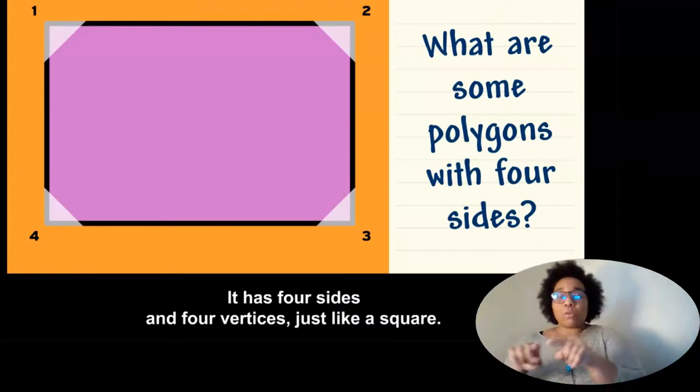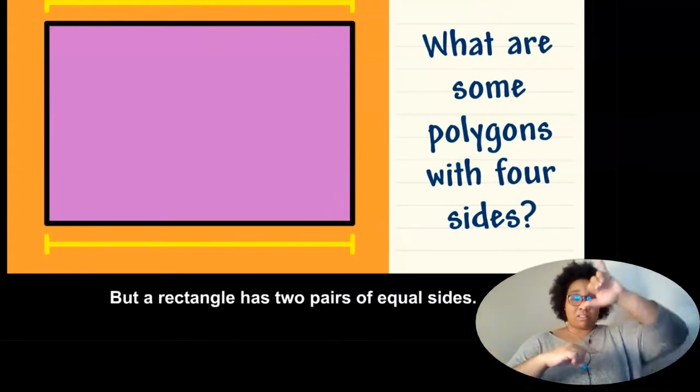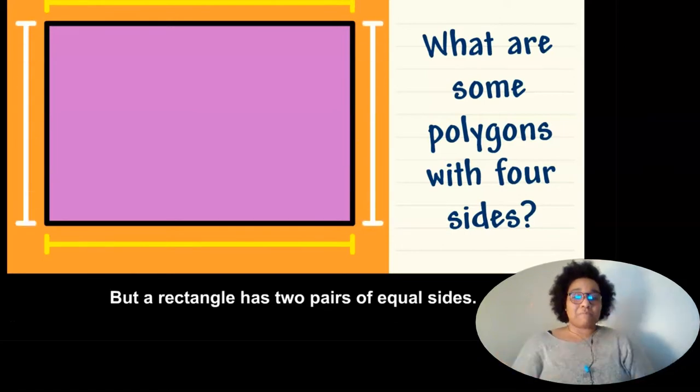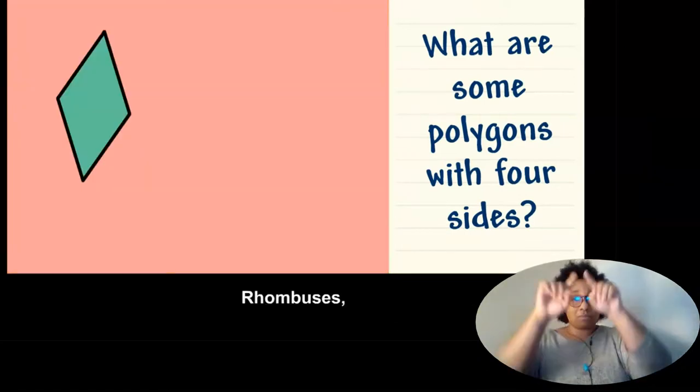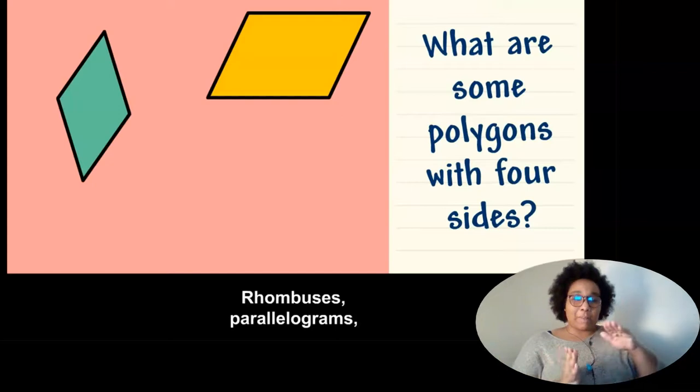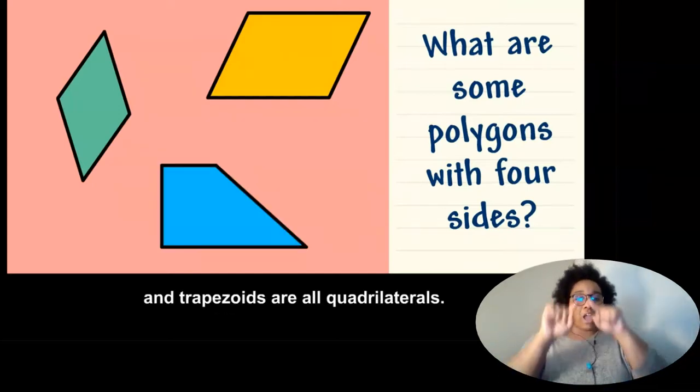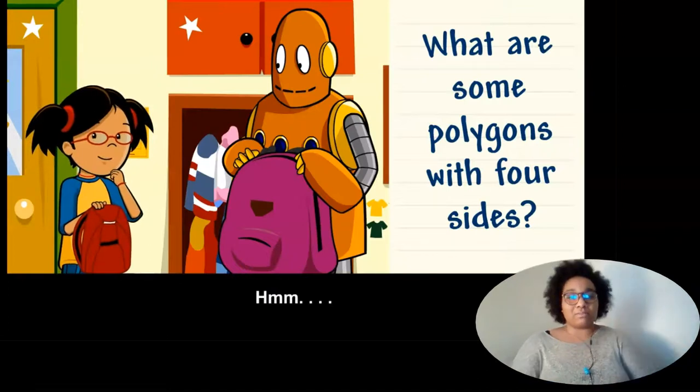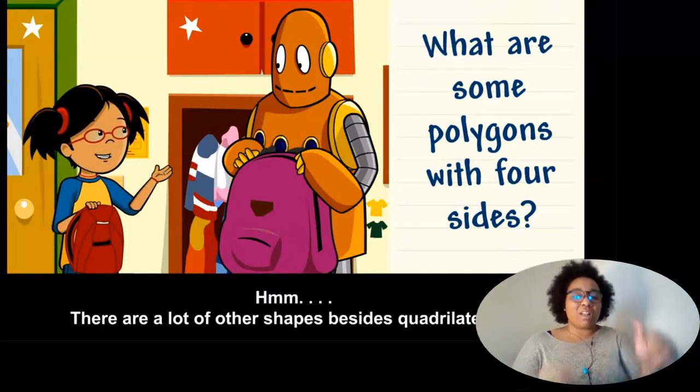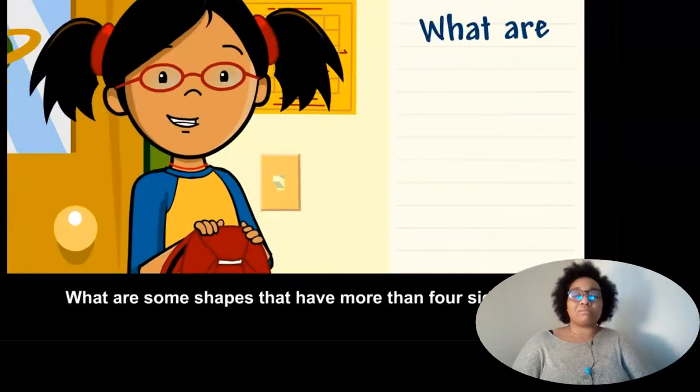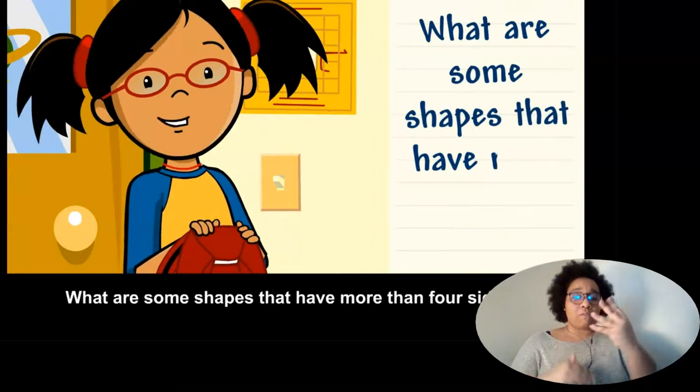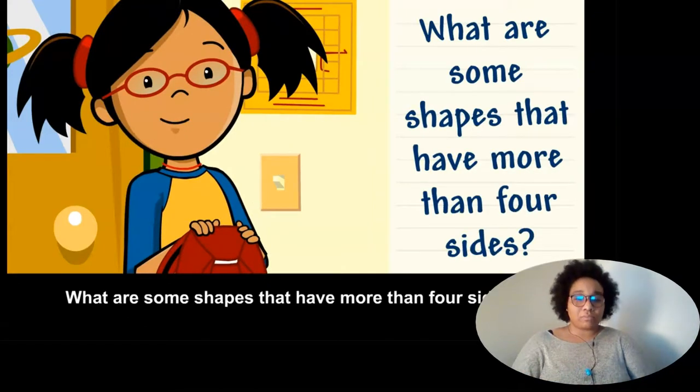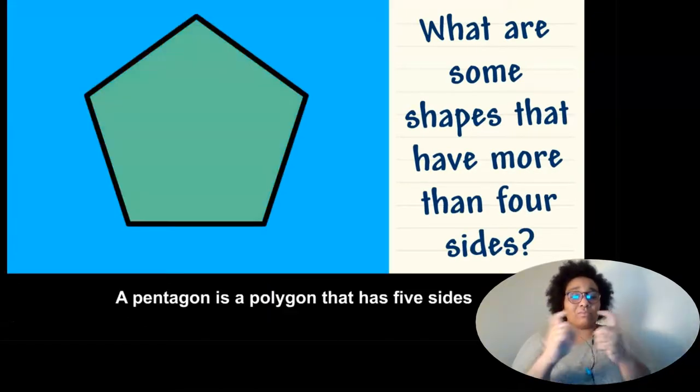Rhombuses, parallelograms, and trapezoids are all quadrilaterals. Hmm, there are a lot of other shapes besides quadrilaterals. What are some shapes that have more than four sides? A pentagon is a polygon that has five sides and five vertices.